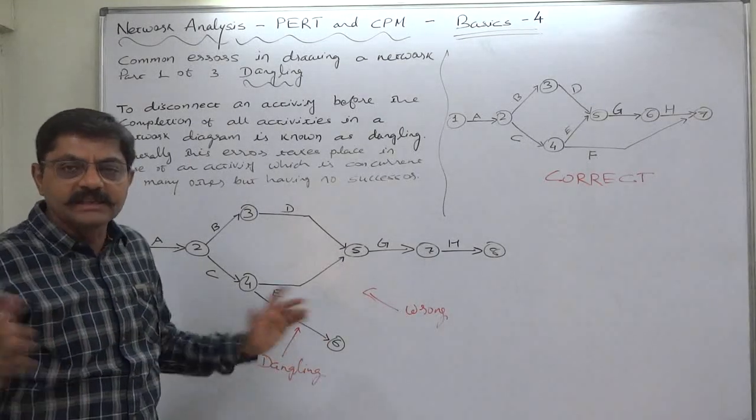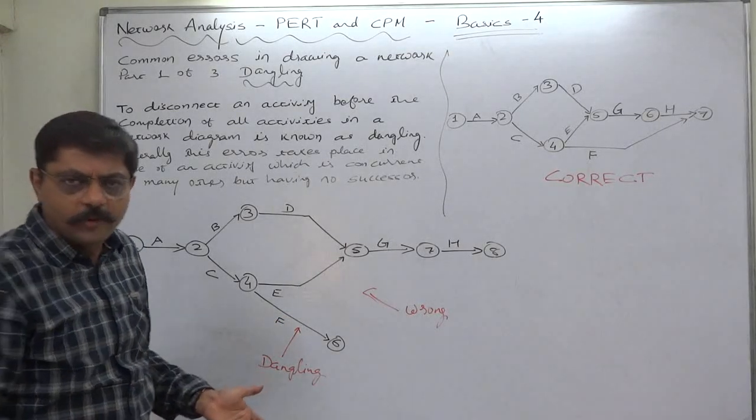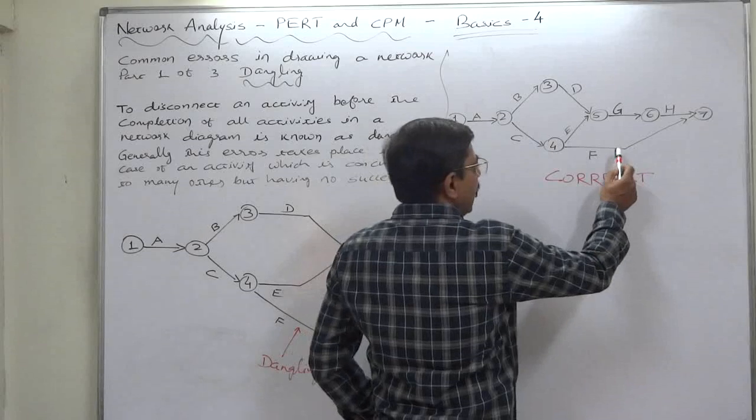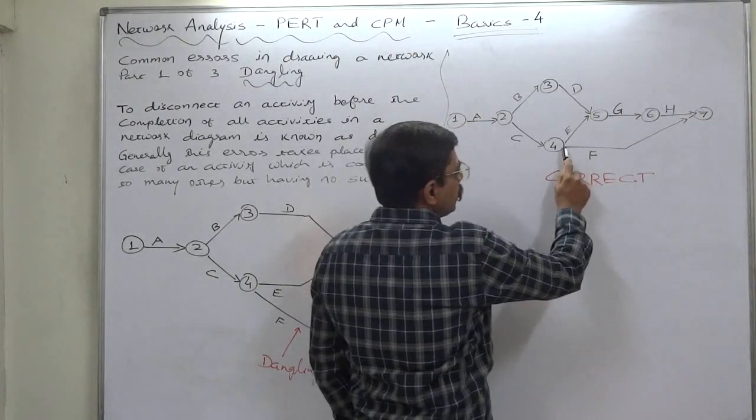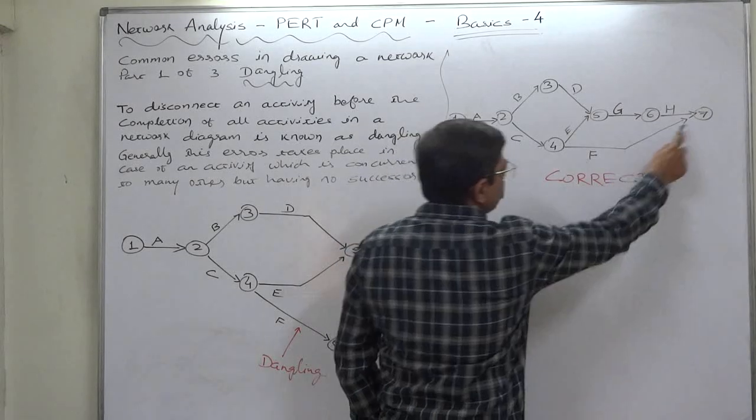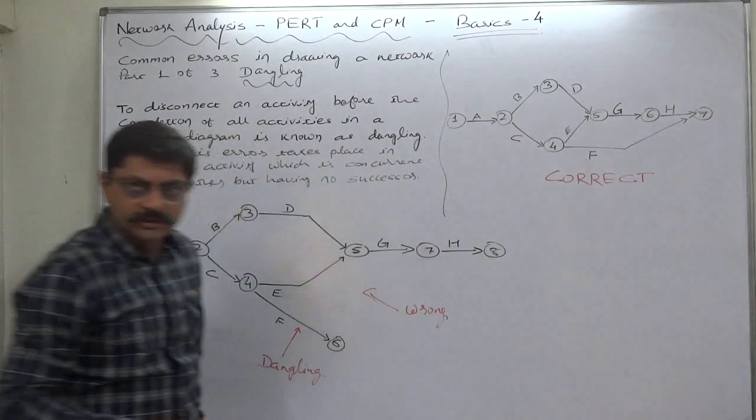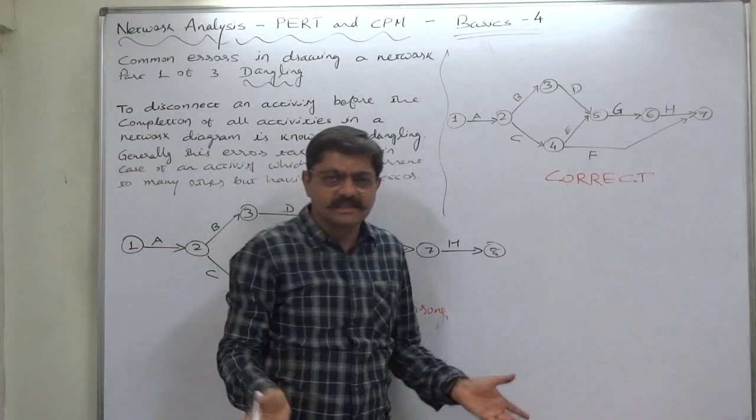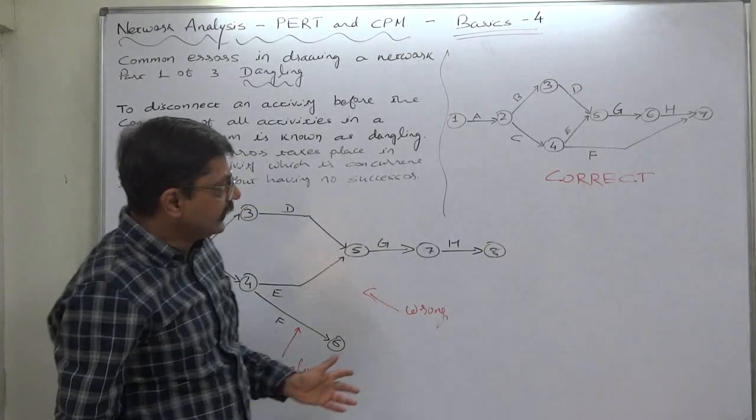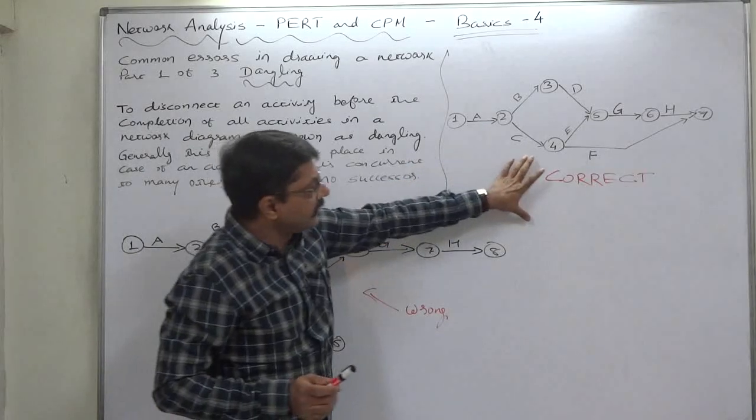...activity. That means F has no successor. There is no problem, but F should be shown something like this. It is not necessary to draw the arrow in this pattern only—you can draw the arrow directly up to the end also. That is up to us how to draw the arrow. This is the correct...